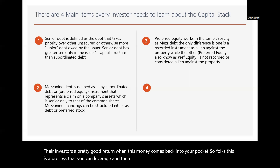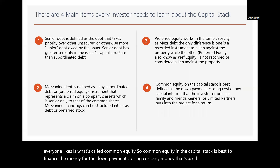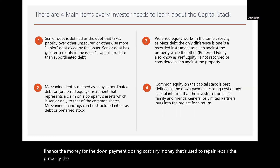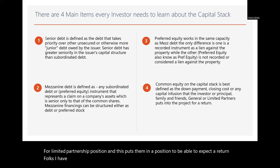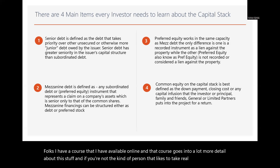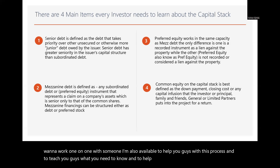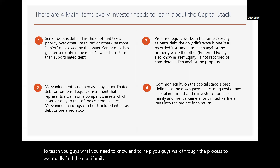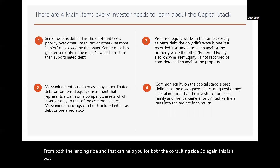The last and most important layer that everyone likes is common equity. Common equity on the capital stack is best used to finance the down payment, closing costs, and any money used to repair the property. The investors — typically principals, family members, or friends — work from a general or limited partnership position and are in a position to expect a return. I have a course available online that goes into a lot more detail, and I'm also available for one-on-one consultation to help you find and close on a multifamily project — from both the lending and consulting side.